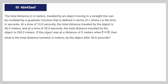We're given the following math question. The total distance d in meters traveled by an object moving in a straight line can be modeled by a quadratic equation defined in terms of t, where t is time in seconds. At 10 seconds the total distance is 50 meters. At 20 seconds the total distance is 200 meters. If the object was at a distance of zero when t equals zero, what is the total distance after 30 seconds?